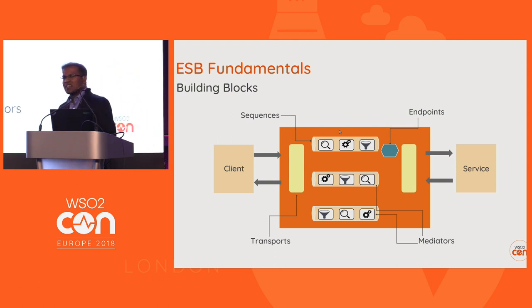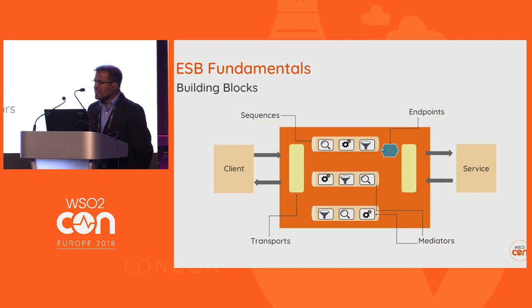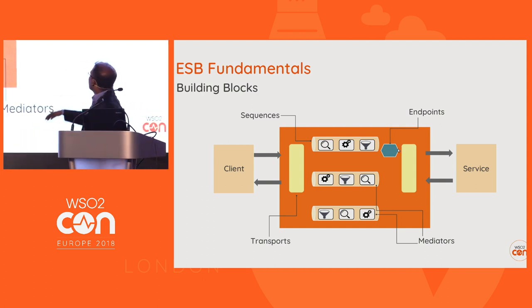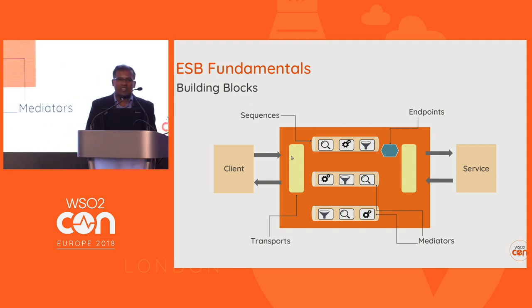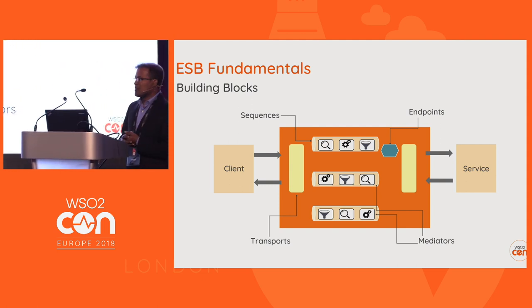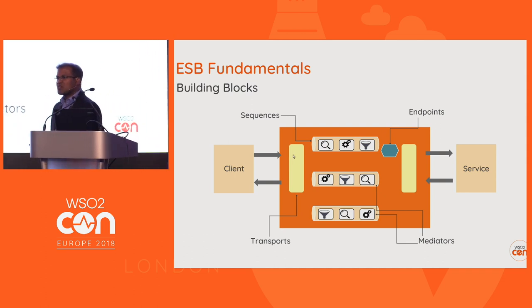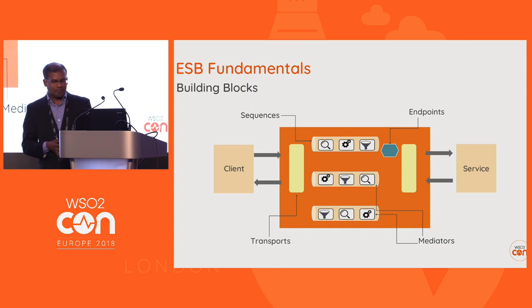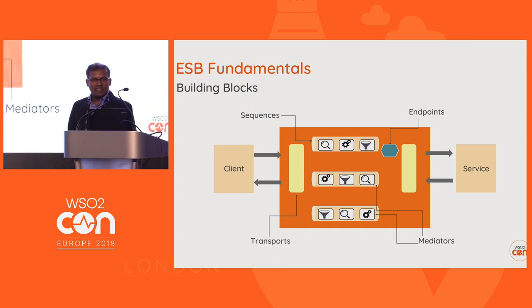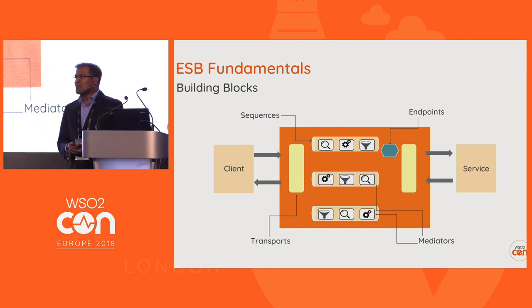A sequence is basically an ordering of mediators according to our requirement. An endpoint identifies the actual destination to which we should send the message. Depending on the configurations and the incoming message content type, the appropriate transport and message formatters are selected. A transport is associated with a message formatter and a message builder — the message builder constructs a message into a canonical format used within the ESB, and the message formatter writes that message back to the wire in the desired format.